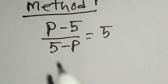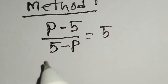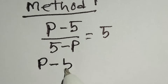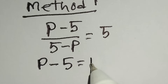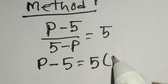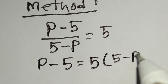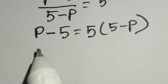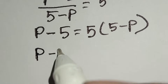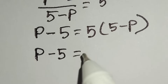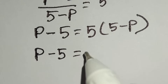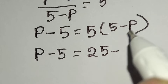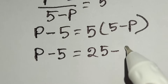By cross multiply, we get p minus 5 is equal to 5 times (5 minus p). Here p minus 5 is equal to 5 times 5, which is 25, minus 5 times p, which is 5p.